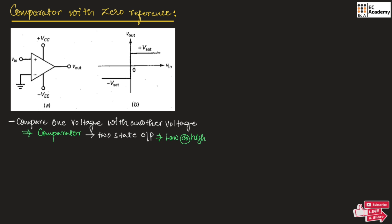A simple comparator without feedback is shown in Figure A. Since we are not using any feedback, this circuit is open loop. In an open-loop configuration, the output will be positive saturation or negative saturation — we know that in open-loop op-amp configuration, the output will be saturated. Since it is a comparator, the output will be either positive saturation or negative saturation.